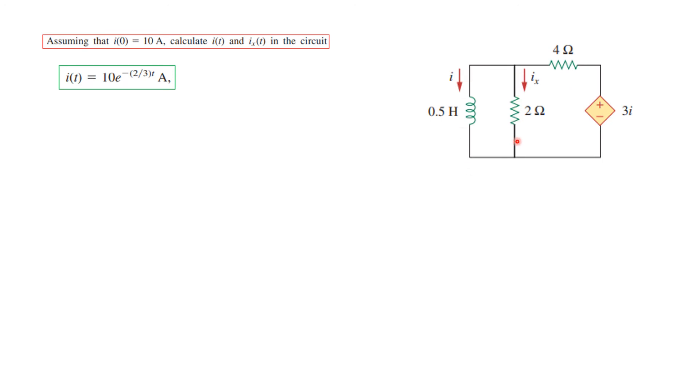Now we need to find Iₓ. For this, if we can find the voltage here, then we can use that voltage to find Iₓ. The voltage here is basically the voltage of the inductor, so V = L(dI/dt). We will use 0.5(dI/dt).